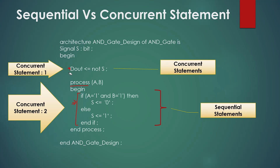Here we have two concurrent statements. One is very clear, and the second concurrent statement will be the whole process from start of process to end of process. If you notice, we terminated the process statement at the end of process with the semicolon, not on the line where we started our process. This means although there are multiple lines inside the process which are separately terminated, the process itself is only terminated where the process ends, and hence it is stated as a single concurrent statement. We will be discussing a lot more on this topic later to make this clear.